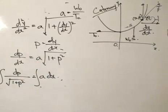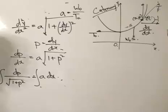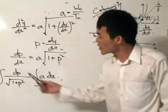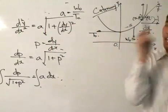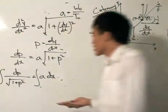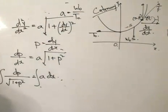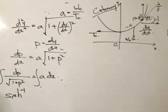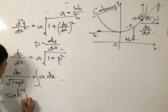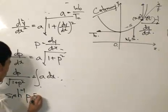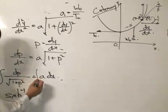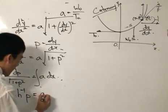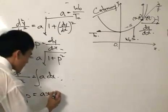Once I separate the variables, P on one side and X on the other, I can integrate both sides. We see that that is the integration form for the sinh⁻¹ function. We integrate this to get sinh⁻¹P equals AX plus C.